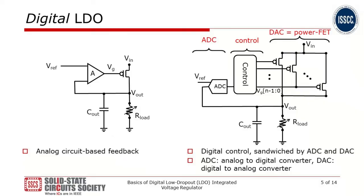Similarly to the amplifier, the ADC senses the difference between output voltage and reference voltage and produces a digital code which enters the digital controller and computes based on the chosen controller. The resulting digital code turns on and off individual transistors of the power transistor array, effectively modulating their resistance. This way it also regulates the output voltage toward V-ref or reference voltage.